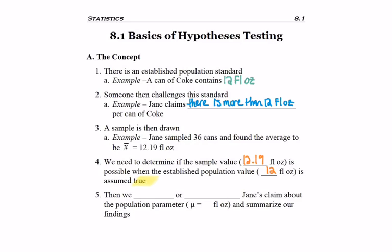So if there really is 12 fluid ounces in a can of Coke, would 36 cans give you a sample of 12.19? Would that be reasonable?